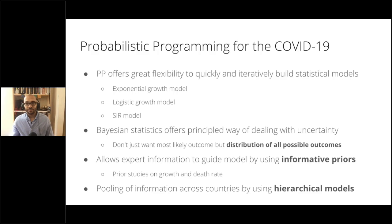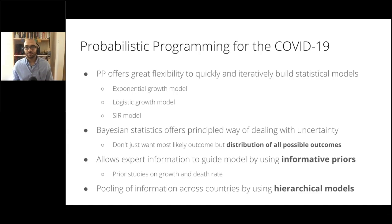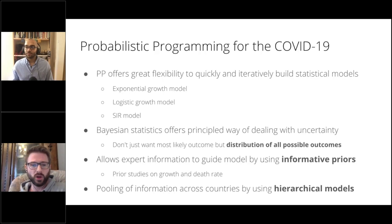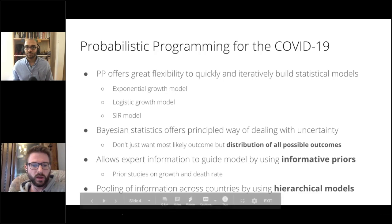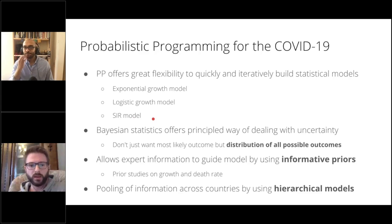I'm not going to do a full introduction to everything that probabilistic programming is — hopefully you can glean what this is about from what I'm going to show. In general, using probabilistic programming, or Bayesian statistics — I'm using them mostly interchangeably here — is really useful for this endeavor because this framework gives a lot of flexibility to quickly and iteratively build various statistical models. The models we're going to look at today start with an exponential growth model, then a logistic growth model which is a little more realistic, and then a so-called SIR model, which is an actual epidemiological model. We'll see what that looks like in PyMC3.